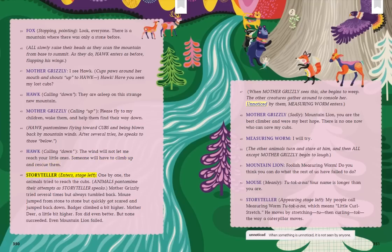Storyteller enters stage left: One by one, the animals tried to reach the cubs. Animals pantomime their attempts as Storyteller speaks. Mother Grizzly tried several times but always tumbled back. Mouse jumped from stone to stone but quickly got scared and jumped back down. Badger climbed a bit higher. Mother Deer a little bit higher. Fox did even better. But none succeeded. Even Mountain Lion failed. When Mother Grizzly sees this, she begins to weep. The other creatures gather around to console her.